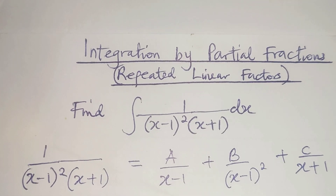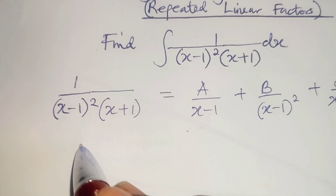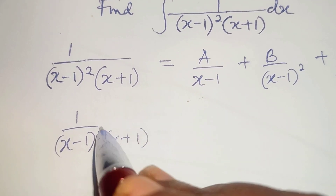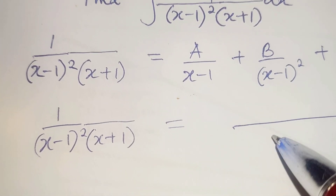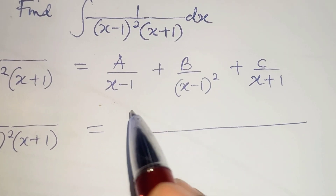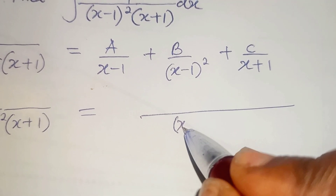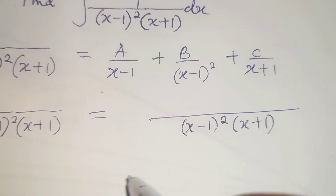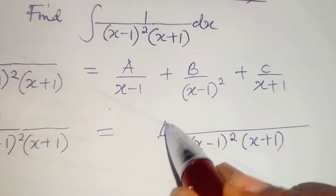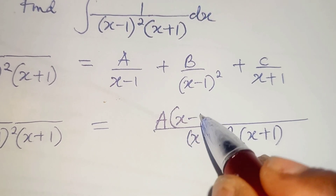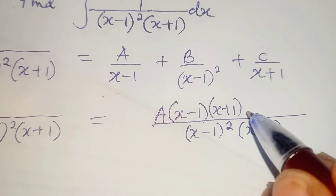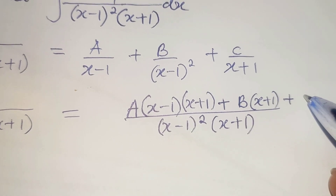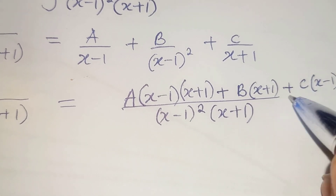So if we add, we will have 1 over (x minus 1) squared times (x plus 1) equal to a combined fraction whose LCM denominator is (x minus 1) squared times (x plus 1). The numerator becomes A(x plus 1) plus B(x plus 1) plus C(x minus 1) squared.